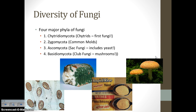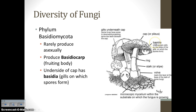Here are some types of fungi. Chytrids were the first fungi, thought to have evolved from protists. Zygomycetes are your common molds. Ascomycetes are the sac fungi, which includes yeast. Basidiomycetes are what you typically think of — club fungi. Basidiomycota produce basidiocarps that look like clubs, with basidia that produce spores on the underside of the cap. When we do our mushroom dissection, you'll see all of these structures.